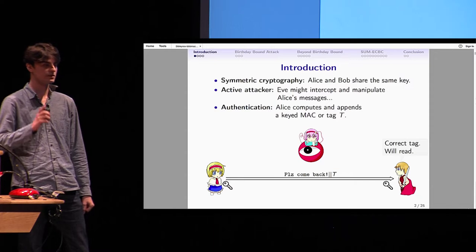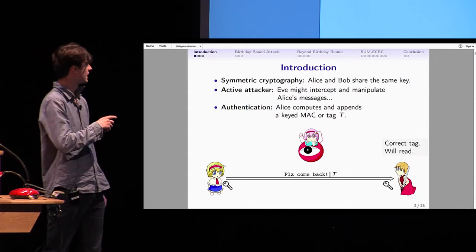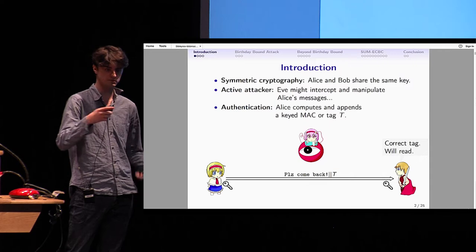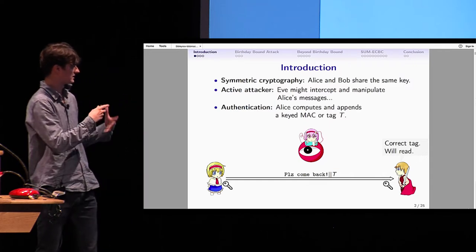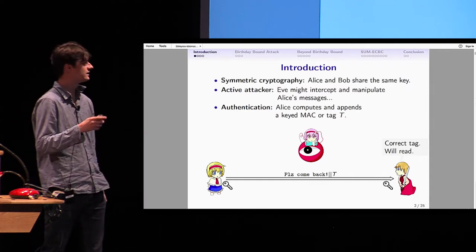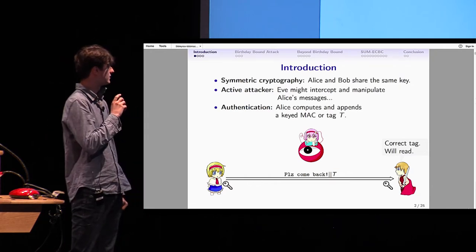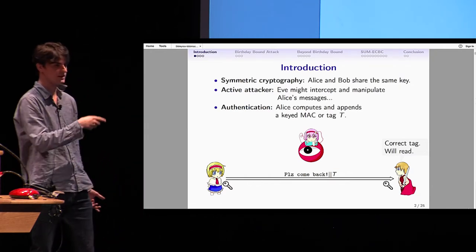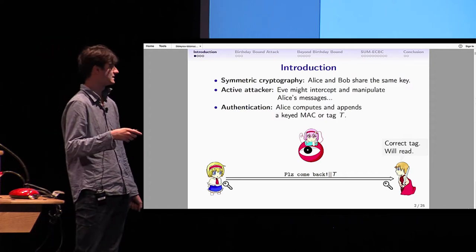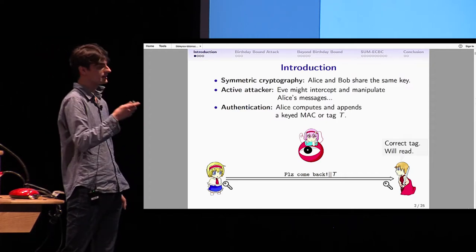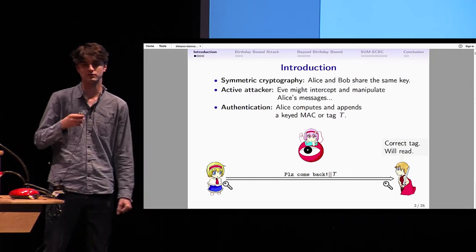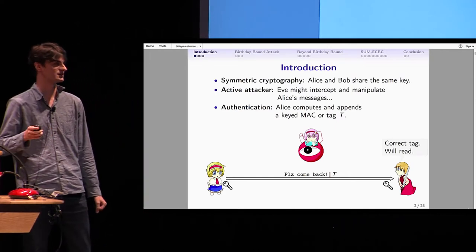In this talk, I won't care about privacy. Alice would just send plain text and doesn't care if Eve can read it. But I care about authentication. We don't want Eve to modify the message Alice is sending. For that, what we do in symmetric cryptography is compute what we call a message authentication code, a MAC tag.